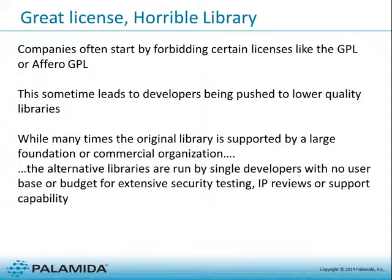The first consequence is what I call 'great license, horrible library.' This occurs when a company forbids a certain license type — say, no GPL anywhere, no Afero anywhere. What happens is developers get pushed to lower-quality libraries. The best-of-breed library may be under a GPL or dual license, but because of the policy, developers are pushed to find something else on the internet that is not as high quality and sometimes has its own intellectual property problems.